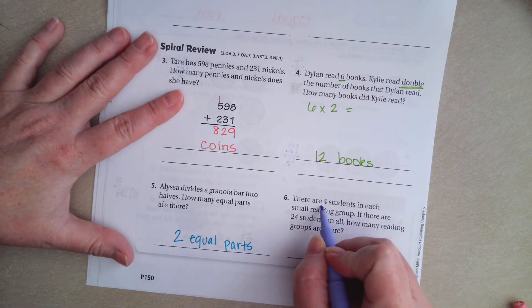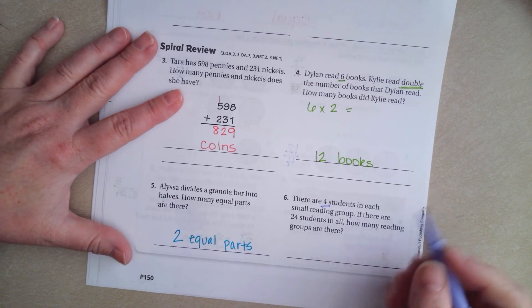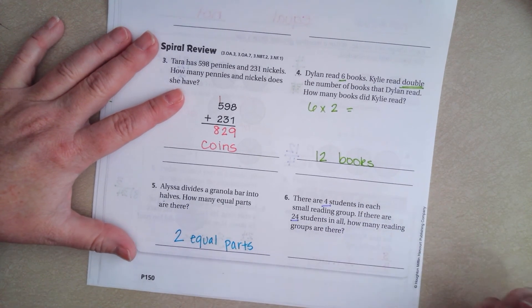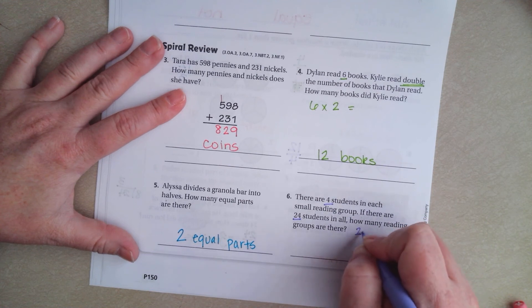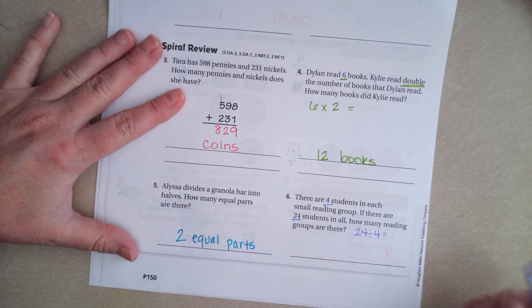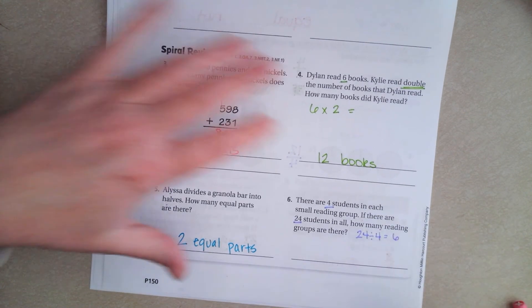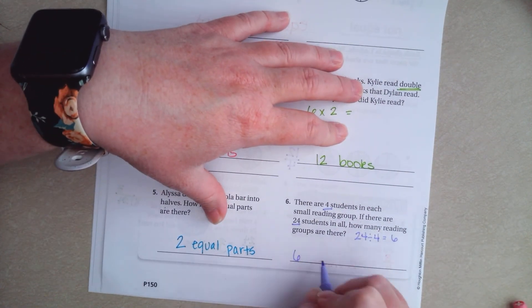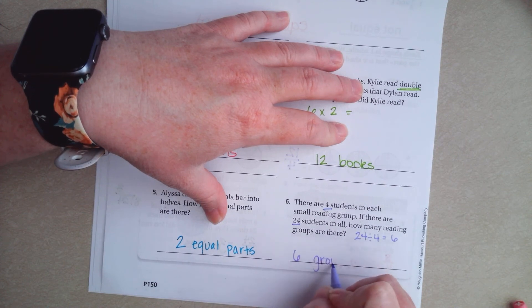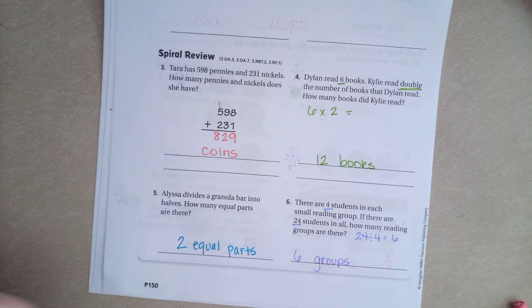There are 4 students in each small reading group. If there are 24 students in all, so 24 divided by 4, how many reading groups are there? Well, 4 times what is 24? Well, 6 times 4 is 24. So, 6 groups.